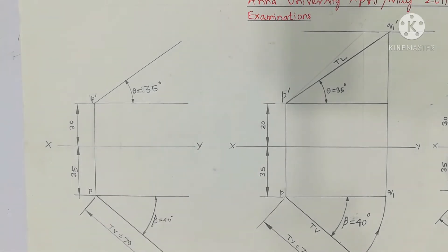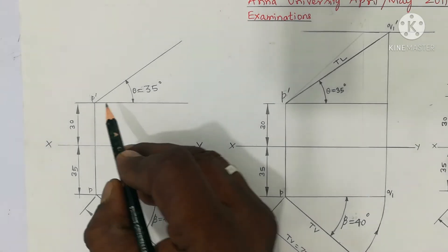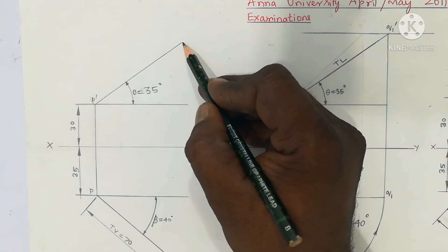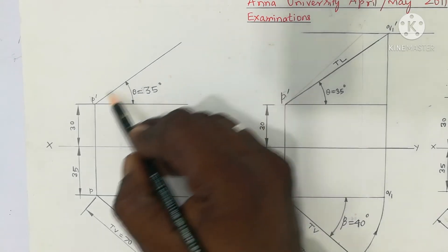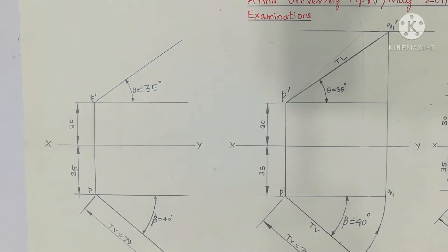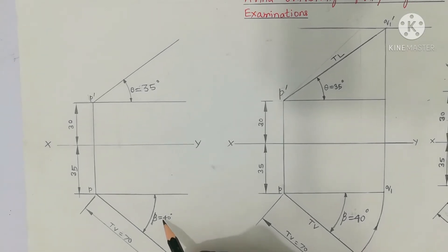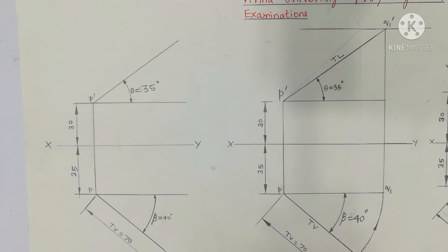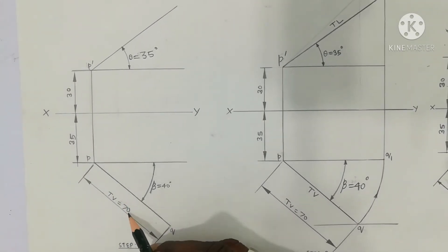If we want to take theta, mark an angle of 35 degree. The length of the true length is our question. So we will try to get the true length, that is TL. Then we will try to get the top view length. We will try to get a 40 degree angle. That is PQ, 70mm. Then we will mark 70mm.